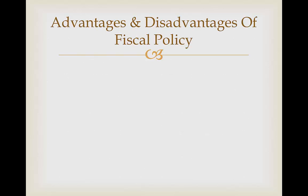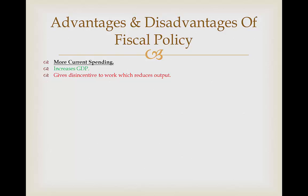Now we're going to look at the advantages and disadvantages of using fiscal policy in order to manipulate levels of aggregate demand to meet macroeconomic objectives. With current spending, if we have more current spending we are going to see increases in our GDP. However, an increase in current spending in the form of pensions and benefits may give a disincentive for people to work, as they're going to be given extra income effectively and they're not going to see the point in working. So as a result, that is going to reduce output.